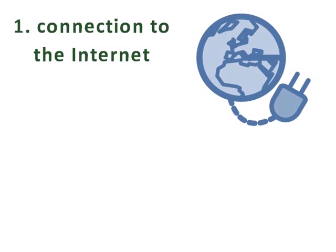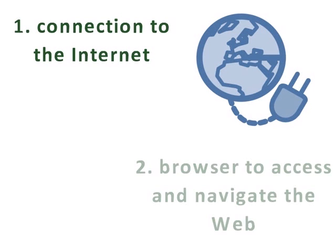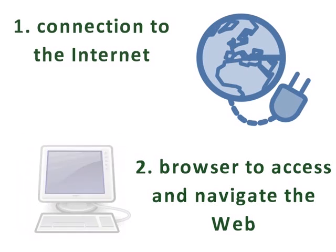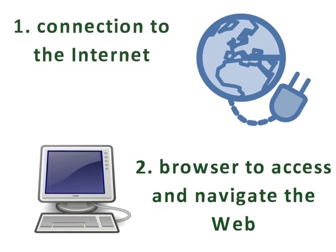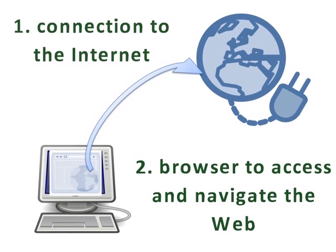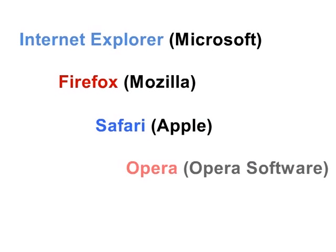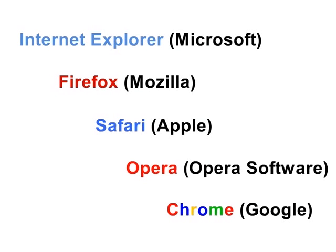To access the web, you need two things. First, a connection to the Internet, and second, you'll need a web browser. A web browser is software that your computer uses to access and navigate the web. Examples of Internet browsers are Internet Explorer, Firefox, Safari, Opera, and Chrome.